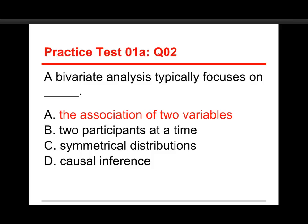This question was also in the pretest — I'll repeat questions so you have another chance at them. Bivariate means 'by two' — 'bi' means two, 'variate' means variable — so two variables, looking at the association. Two participants at a time would be like a dual case study. Symmetrical distribution describes the shape of a distribution. Causal inference is when you're trying to say one variable causes changes in another, which requires bivariate analysis but is much more than that. The correct answer is A.